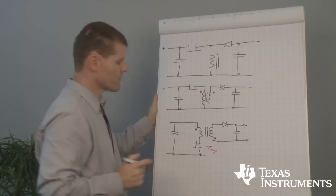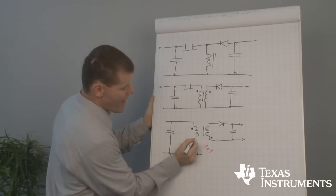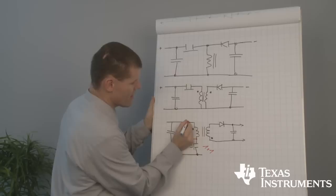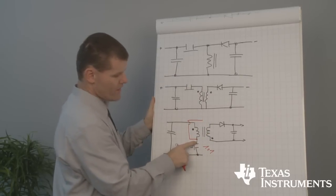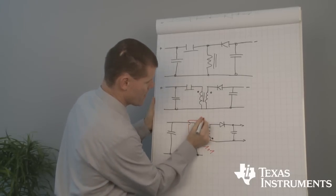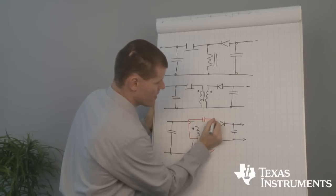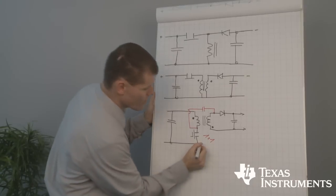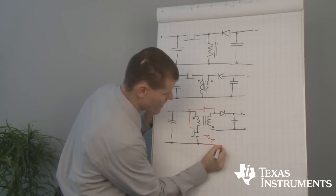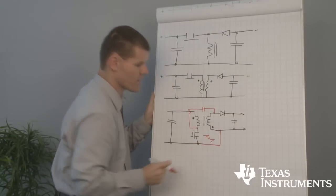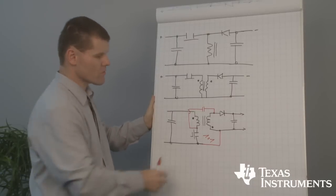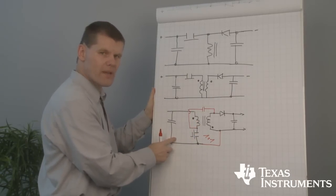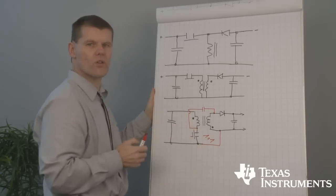If we got a windings ratio one by one, we can simply add a capacitor from the drain to the anode of our rectifier. And we need a connection here. That's all we need to transfer the flyback topology to a SEPIC topology.